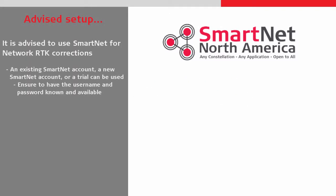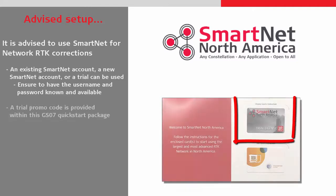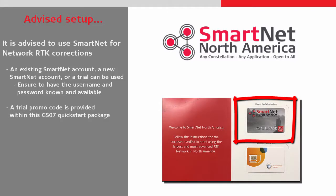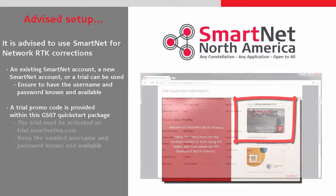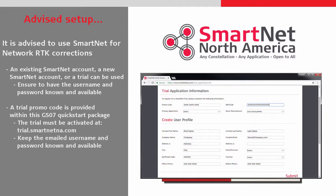Our advice is wherever possible to use Leica Smartnet for network RTK corrections. This could be using an existing account, a new account, or a trial. A trial promo card is actually provided within the GS07 quick start package. This trial needs to be activated at trial.smartnetna.com and once registration is complete, a username and password will be provided via email.